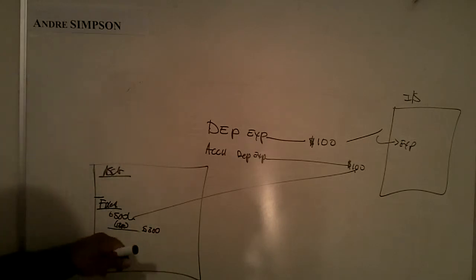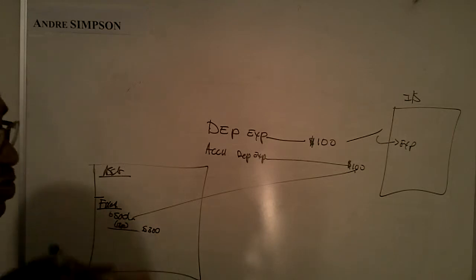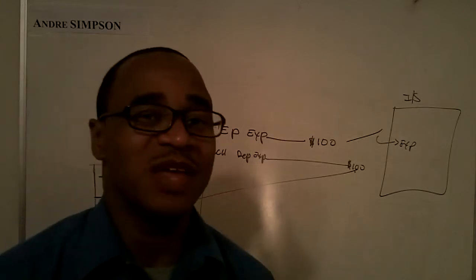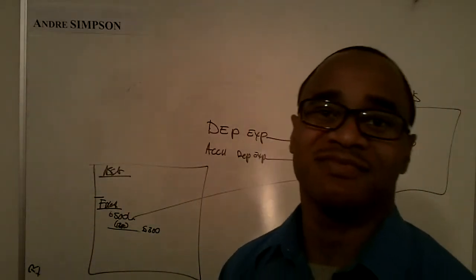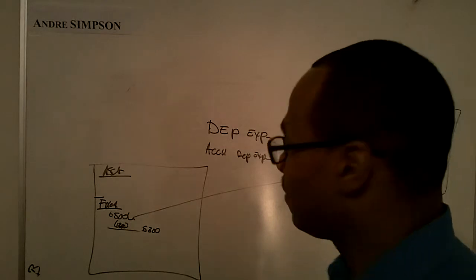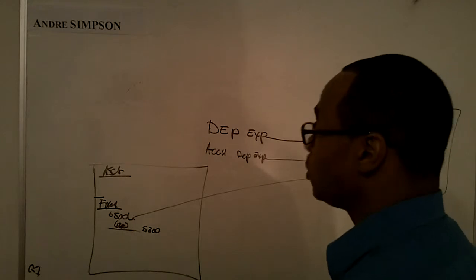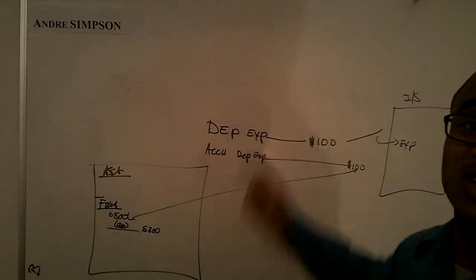And every year, this amount on the balance sheet will keep going down, and the accumulated depreciation will keep going up. And then, at the end of the five years, year five, the book value that's going to be remaining, the residual value will be equal to $500.